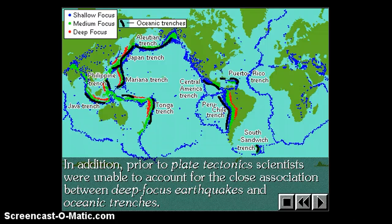In addition, prior to plate tectonics, scientists were unable to account for the close association between the deep focus earthquakes and the occurrence of ocean trenches. Every place we find these very deep earthquakes, like in the Andes Mountains, there's always a parallel trench, the Peru-Chile Trench. Along the Tonga earthquakes, there's a Tonga trench. Along the Philippine deep earthquakes, there's a Marianas Trench. Along the Indonesian deep earthquakes, we have the Java Trench. Japan's deep earthquakes are bordered by the Japan Trench. Every place you have deep earthquakes, you always have a trench.